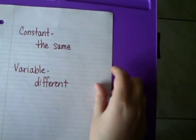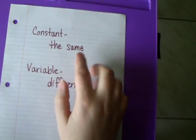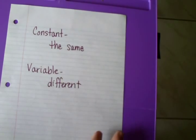We're going to be looking at today whether a table is constant or variable. The difference between the two words is that constant means the same, and variable means that the change is different.